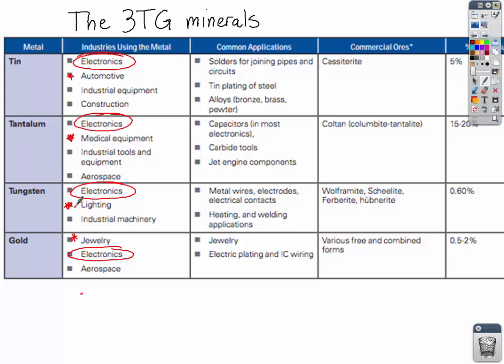Let's talk a little about tantalum. Tantalum is extremely corrosion resistant, very rare, and is a nice substitute for platinum. Tantalum is used in your iPhone and smartphone as a capacitor. If you have a smartphone in your pocket, you're most likely carrying a little piece of the Congo with you every day.